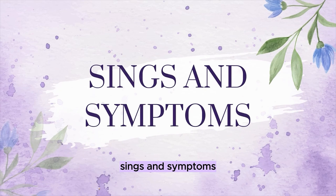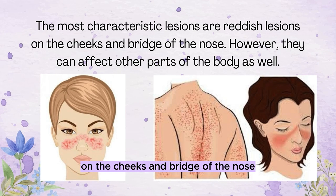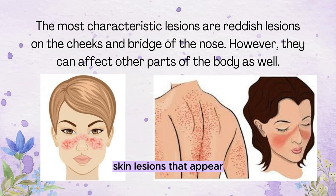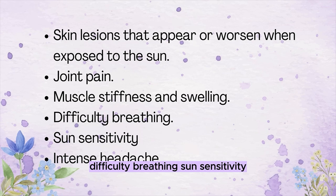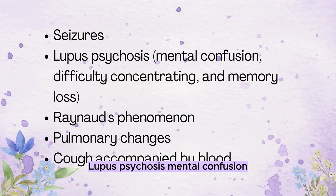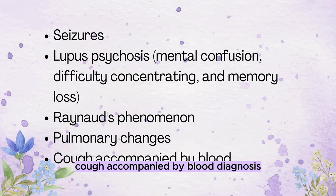Signs and Symptoms: The most characteristic lesions are reddish lesions on the cheeks and bridge of the nose, though they can affect other parts of the body as well. Other symptoms include skin lesions that worsen with sun exposure, joint pain, muscle stiffness and swelling, difficulty breathing, sun sensitivity, intense headache, seizures, lupus psychosis, mental confusion, difficulty concentrating, memory loss, Raynaud's phenomenon, pulmonary changes, and cough accompanied by blood.